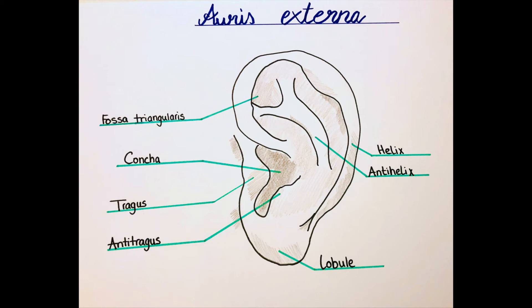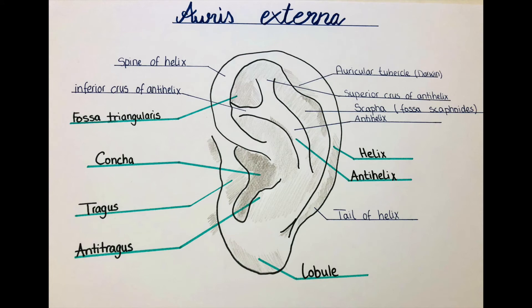Now I want to recap the different structures visible on the auricle. Starting on the outer portion with the helix, which can be divided into the spine of the helix, the main part of the helix, and the tail of the helix. The antihelix in the middle has two crura: the superior one pointing upwards and the inferior one pointing downwards. Both of them together form the antihelix.